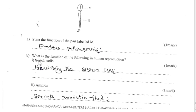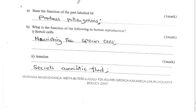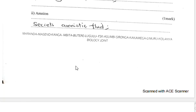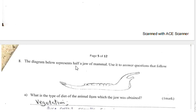Part B: What is the function of the following in human reproduction? Sertoli cells nourish and provide nutrients to the sperm cells. The amnion secretes amniotic fluid.